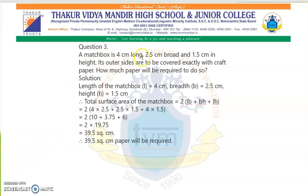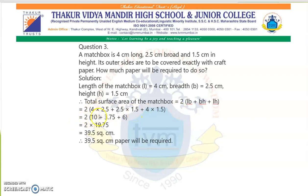Question 3 from the textbook: A matchbox is 4 cm long, breadth is 2.5 cm, height is 1.5 cm. Its outer sides are to be covered with craft paper. How much paper will be required? Total surface area = 2(LB + BH + HL) = 2(4×2.5 + 2.5×1.5 + 4×1.5) = 2(10 + 3.75 + 6) = 2 × 19.75 = 39.5 cm². Therefore, 39.5 cm² of paper will be required.